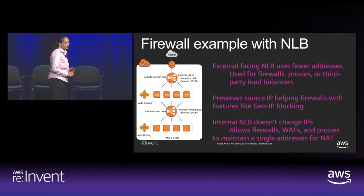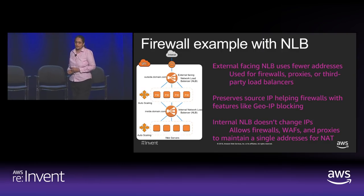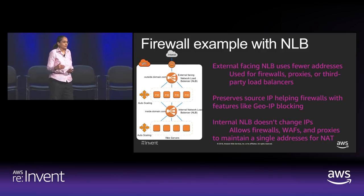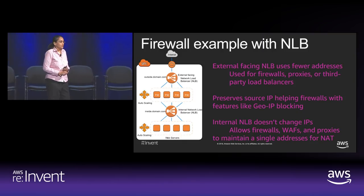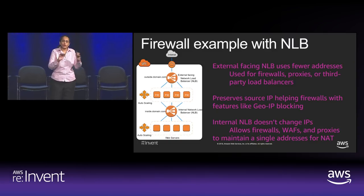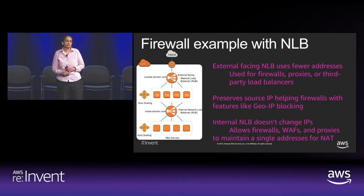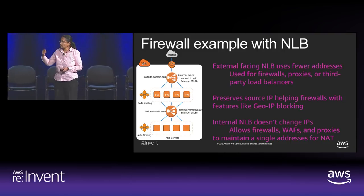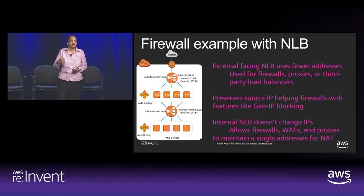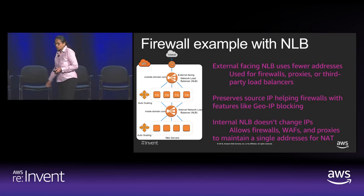A simple real-world firewall example: two Network Load Balancers — an external load balancer front-ending a set of firewalls, and an internal load balancer front-ending web servers. For the firewall fleet, the single IP makes all firewall configuration simple — you whitelist a single IP and can horizontally scale the firewall fleet since only a single IP is exposed. Since we preserve the source IP, if the proxy layer such as a firewall or WAF is NATing, you have the IP you want to NAT with. Similarly with the internal load balancer, we preserve the source IP, so you're dealing with a single IP to whitelist.